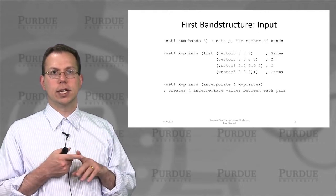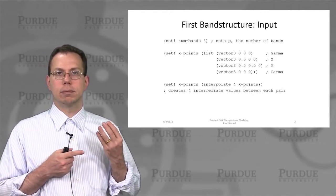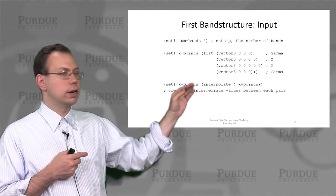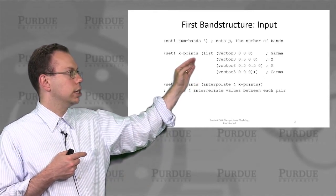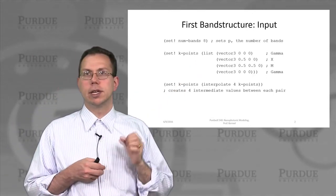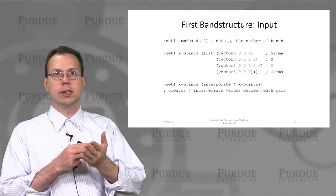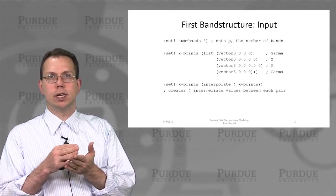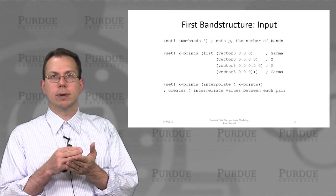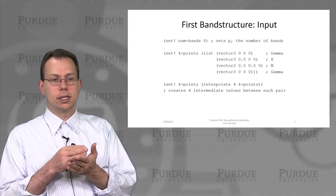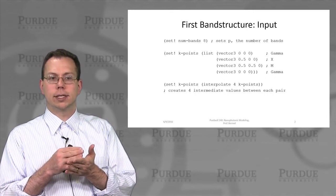And then second, we'll recall the previous band structures that we had shown. There are these special key points which are gamma, x, and m values. We're going to set up something that would walk through all these special key points that correspond to the irreducible Brillouin zone for a square lattice. In this case, we go from gamma to x,